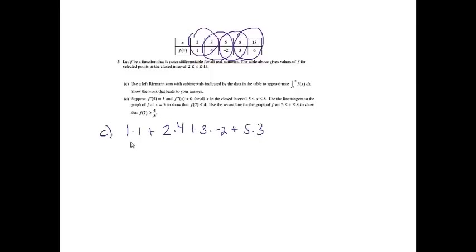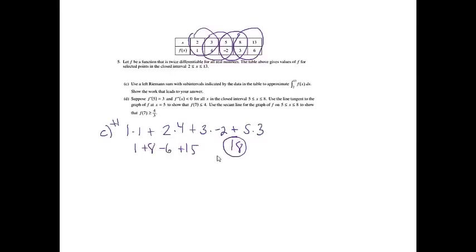Working this out: 1 plus 8 minus 6 plus 15. 1 plus 8 is 9, minus 6 is 3, plus 15 is 18. That part of the problem was worth 2 points: 1 for showing a left Riemann sum, and 1 point for the correct answer.